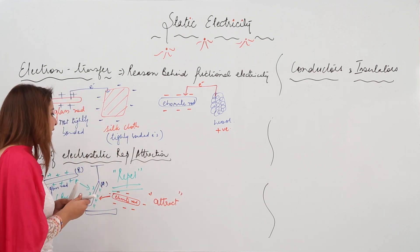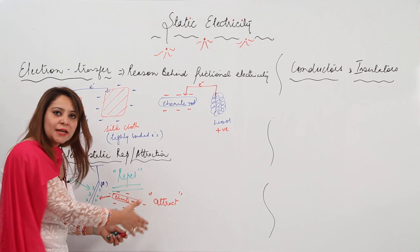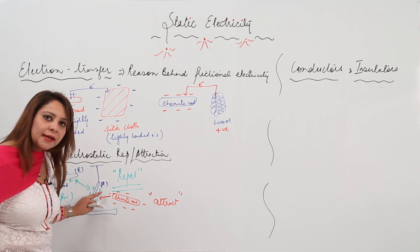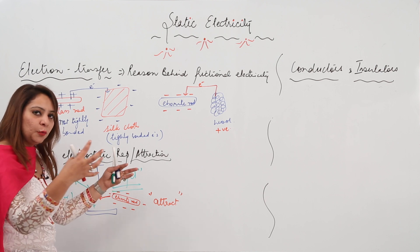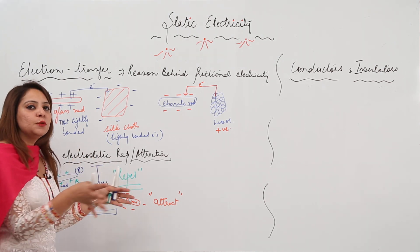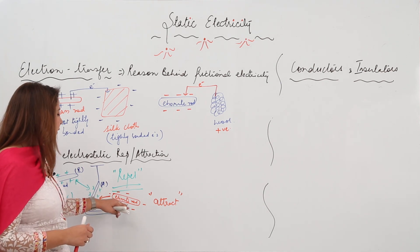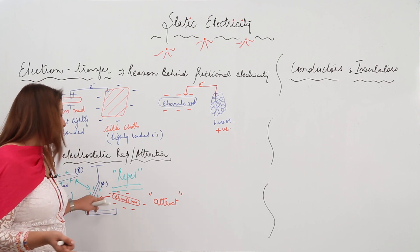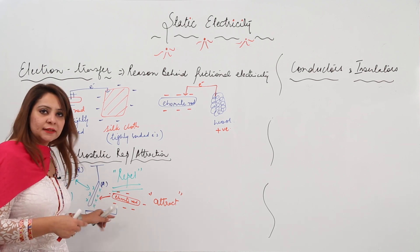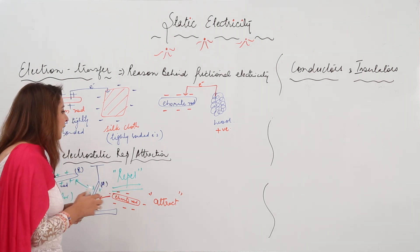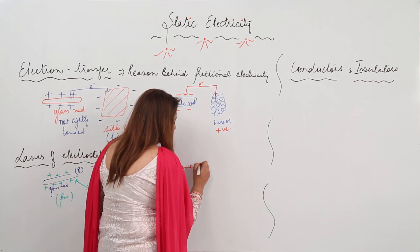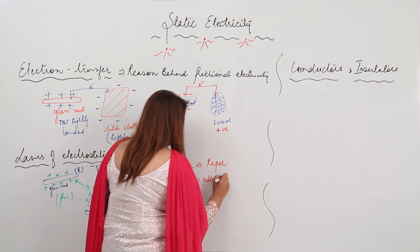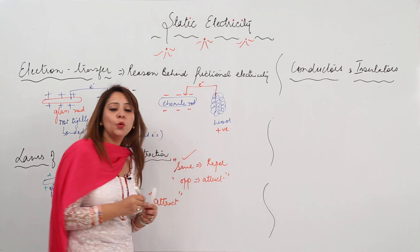The reason the glass rod repels the other glass rod but attracts the ebonite rod is that both glass rods after rubbing with silk cloth acquire the same charge, so they tend to move away when brought close. When we bring the ebonite rod closer to the glass rod, because ebonite has acquired a negative charge and the glass rod has a positive charge, they attract and tend to come closer to each other.